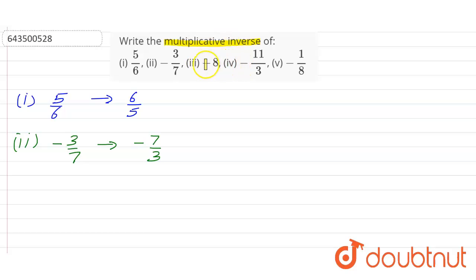It's time to consider the third which is -8. So the third one is -8, we can consider it as -8/1. So the reciprocal of that is -1/8, means the multiplicative inverse of -8 is -1/8. Now it's time to consider the fourth part, -11/3.